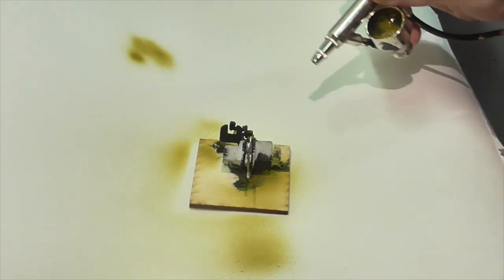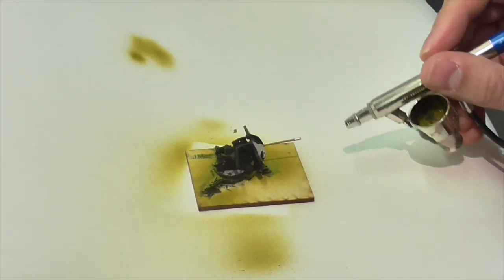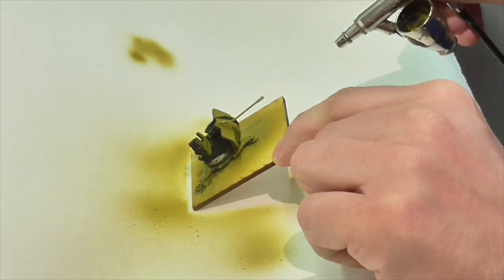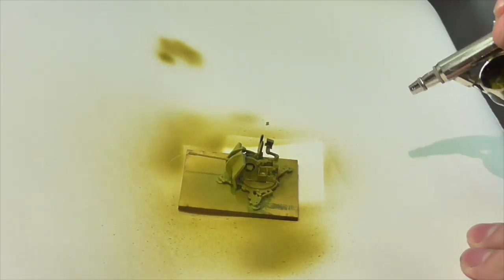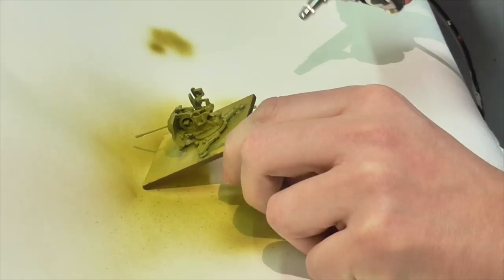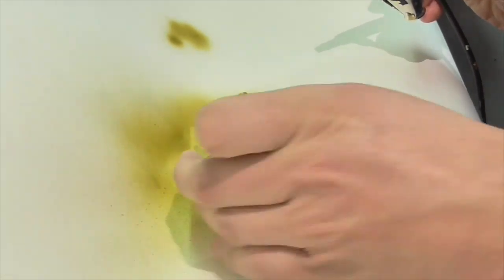To start out, Jasper has airbrushed basically the entire gun using Vallejo Air Surface Primer Dark Yellow here and he thins down his paint quite a bit even though that paint is already pretty thin just because it goes on a lot better that way.